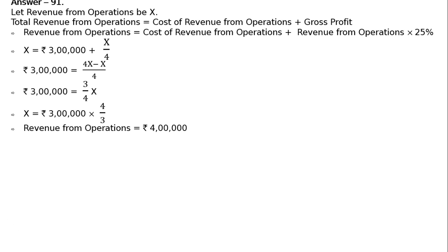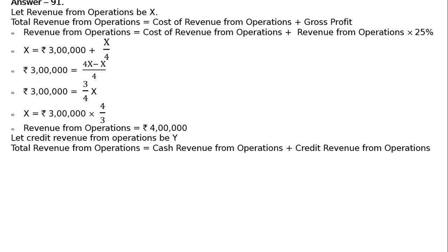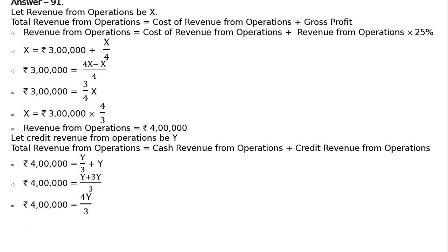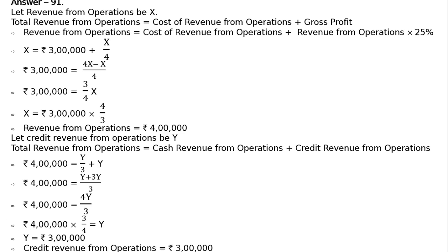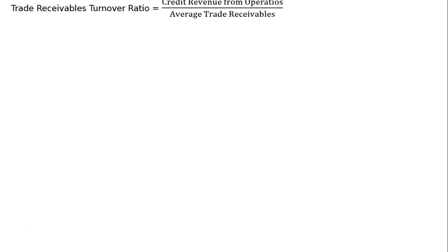Now let credit revenue from operations be Y. Total revenue from operations equals cash revenue from operations plus credit revenue from operations. It is given that cash revenue from operations is one-third of credit revenue from operations. So ₹4 lakh equals Y by 3 plus Y, which equals 4Y by 3. Therefore Y equals ₹4 lakh multiplied by 3 by 4, giving credit revenue from operations as ₹3 lakh.